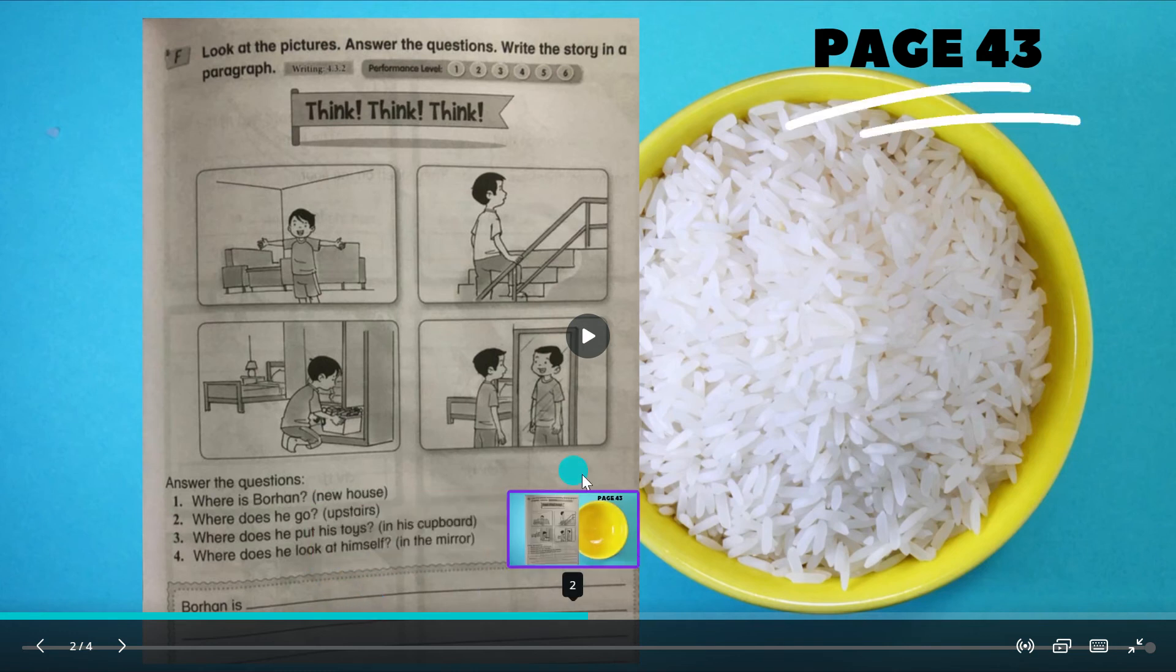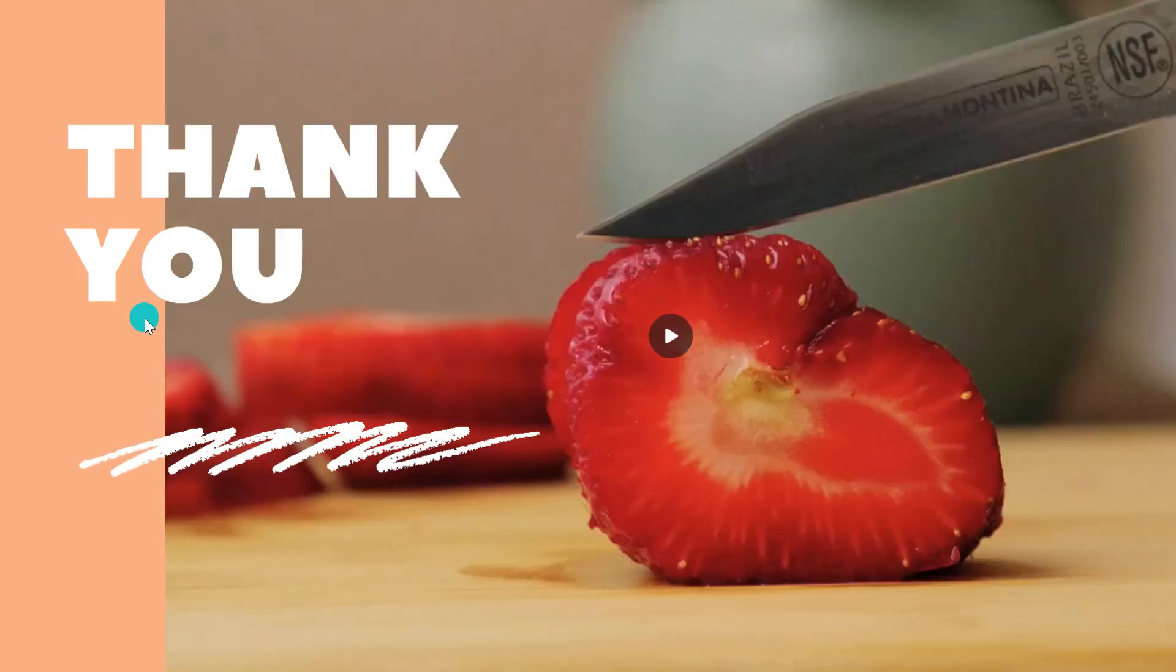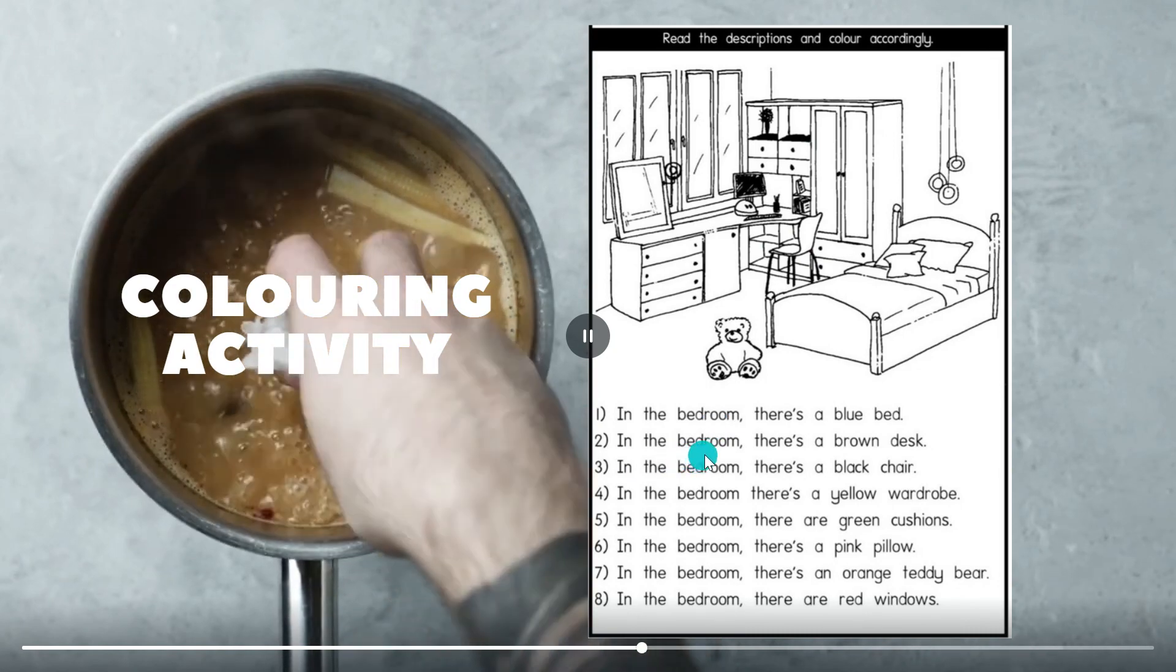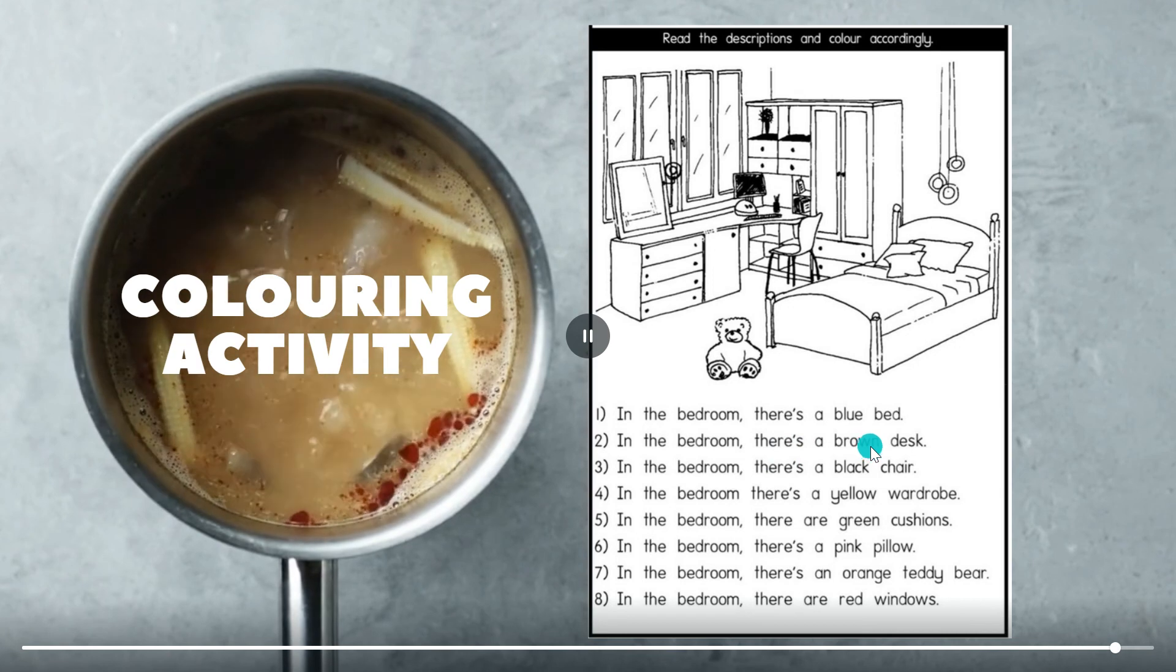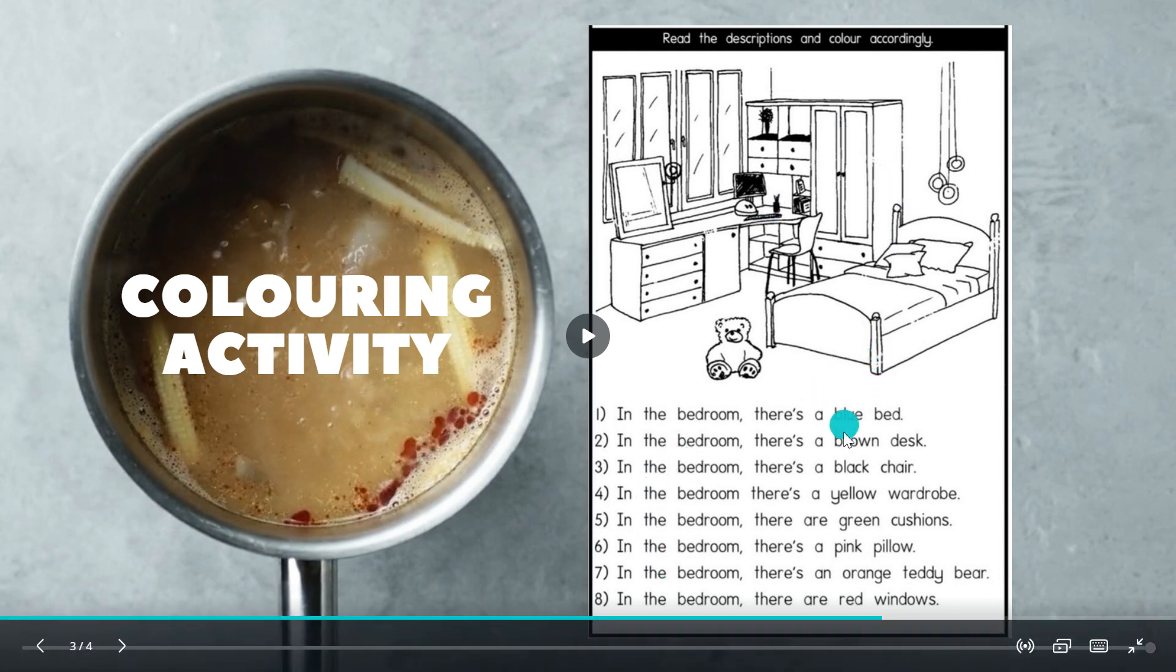Now we go to the second exercise - a coloring activity. In the bedroom there's a blue bed, so you have to color the bed blue. The second one is brown desk. Desk is meja. Brown is chocolate color. This is how you spell bedroom. Then do number 1 to 8, color according to what is written here. Teacher will give the paper later.